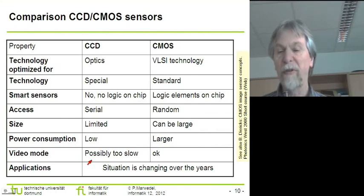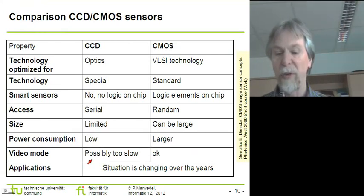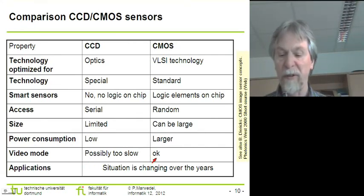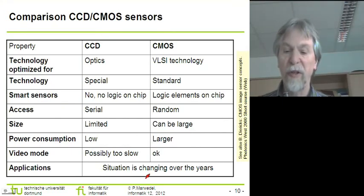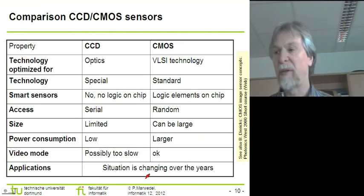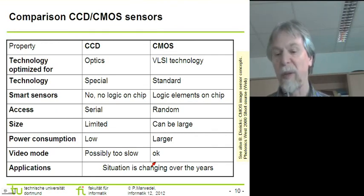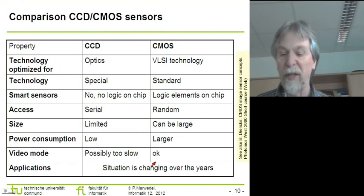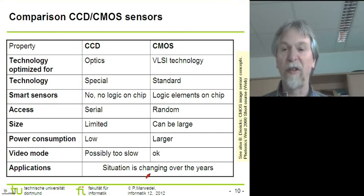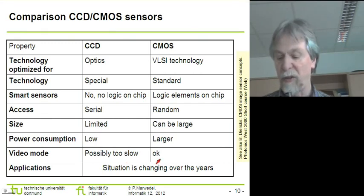CCDs are usually too slow for video mode — they may be okay for images, but if we would like to record videos we might have to go for CMOS devices. The applications are actually changing over the years as the different characteristics evolve. It might happen that in certain years an application would be implemented using CCDs, whereas a few years later the same application might be implemented with CMOS devices, so it's not really recommended to tie certain applications to one technology.